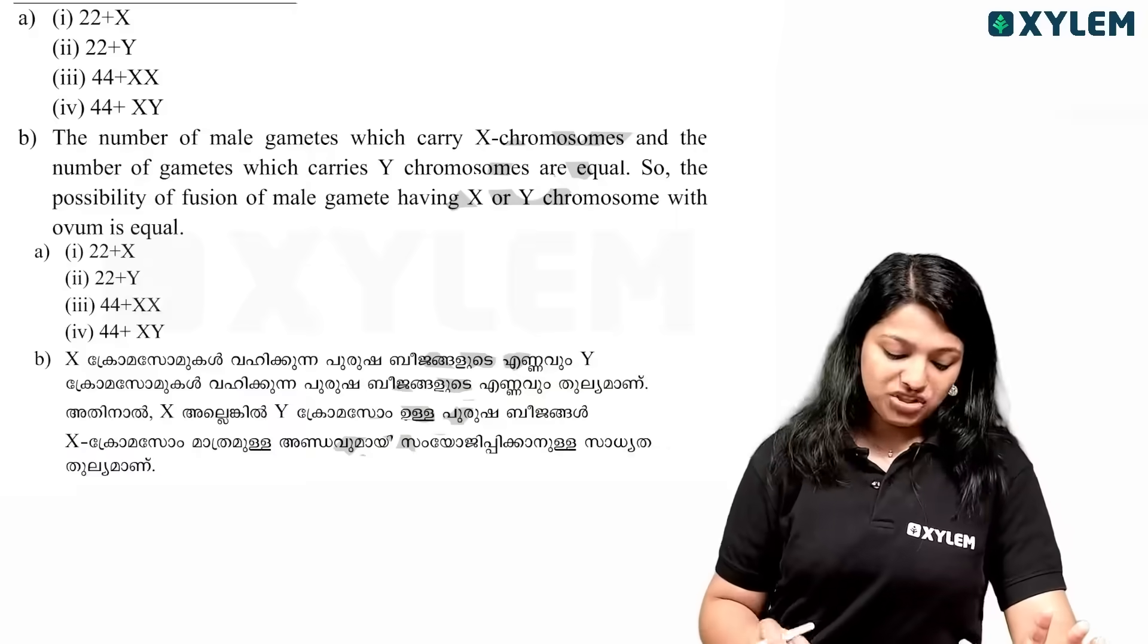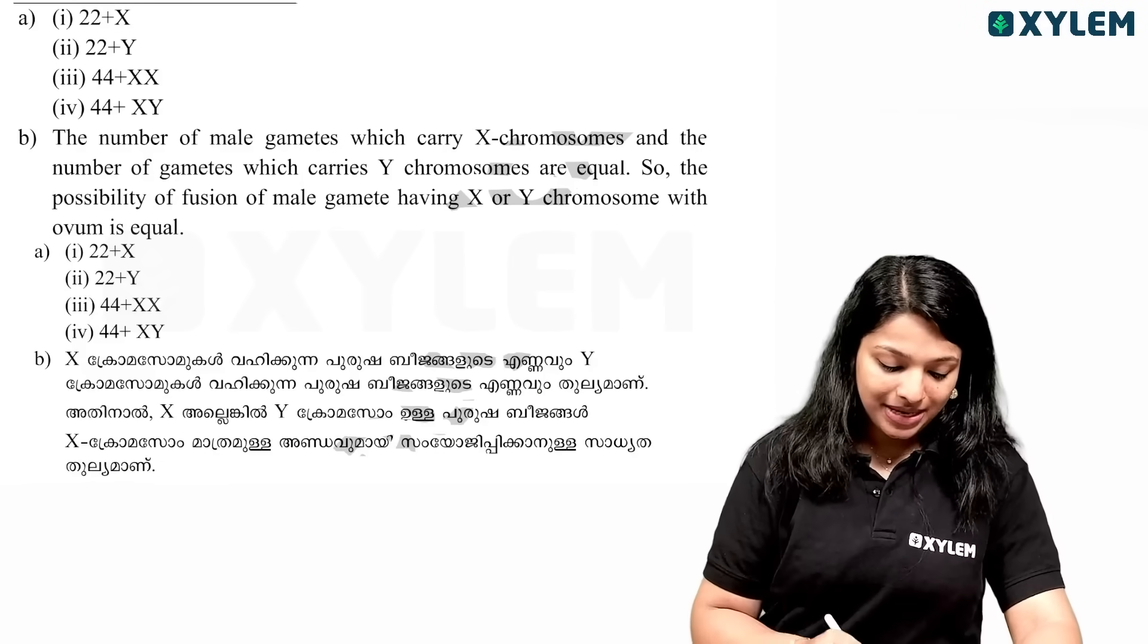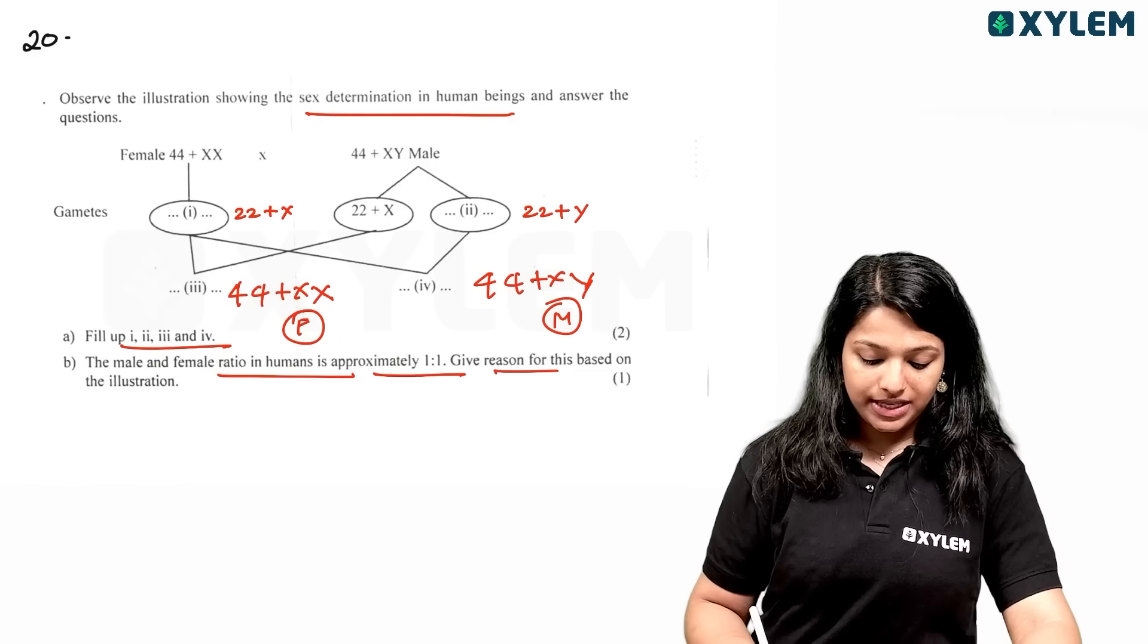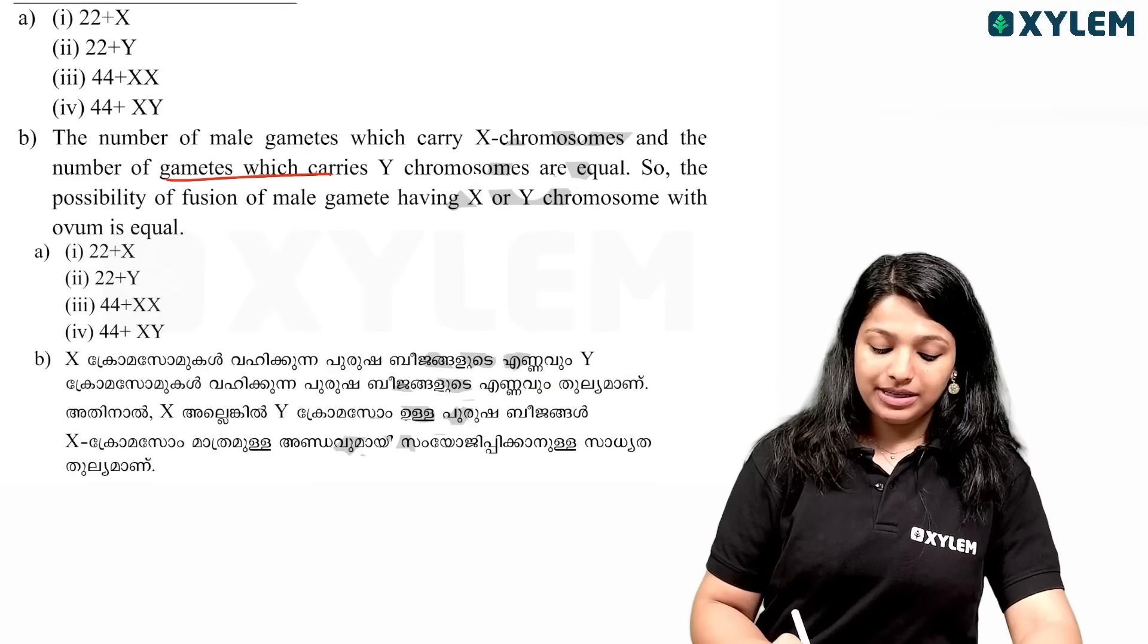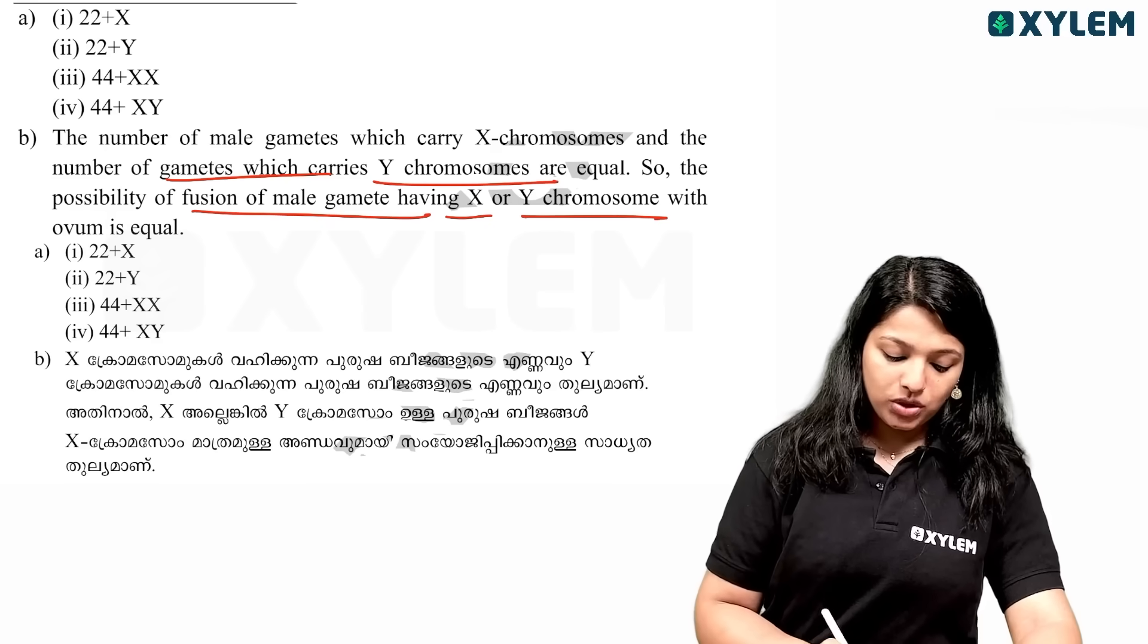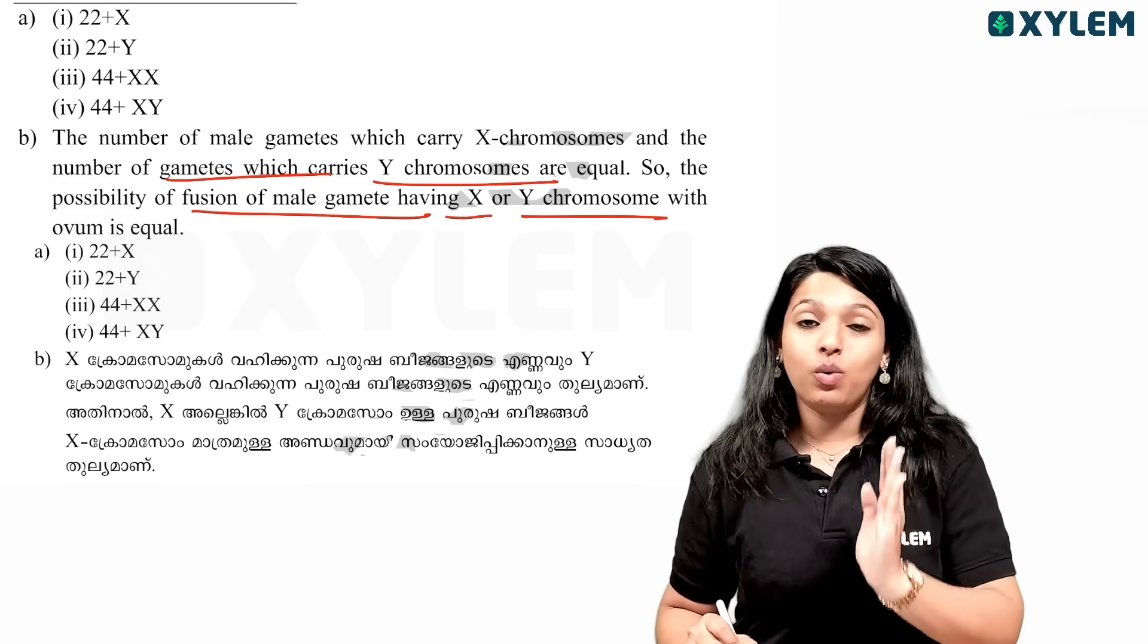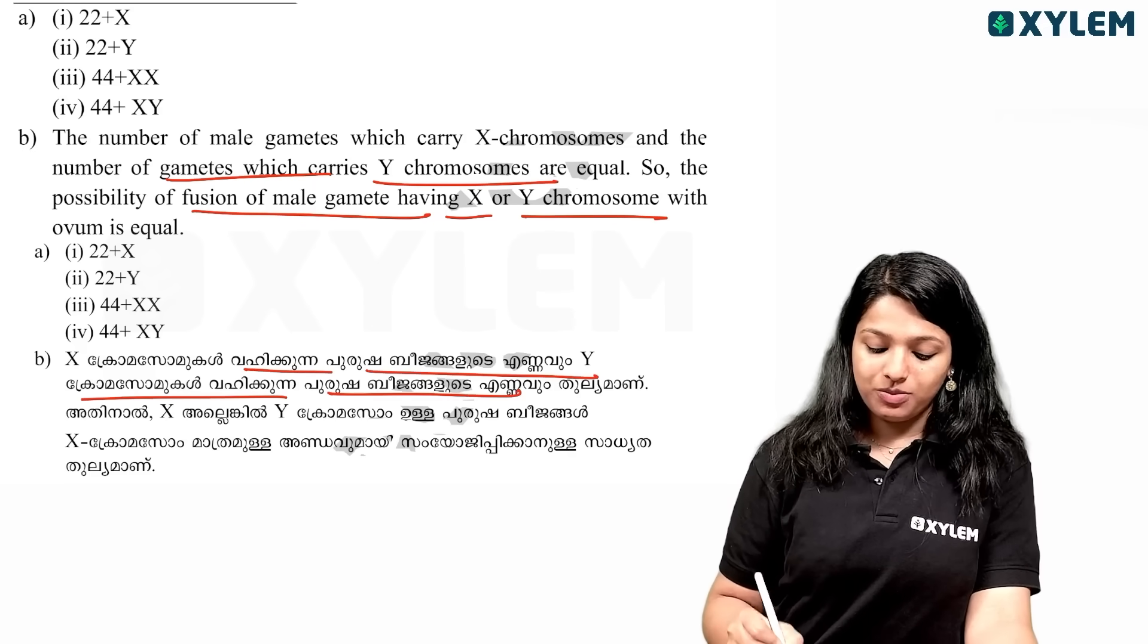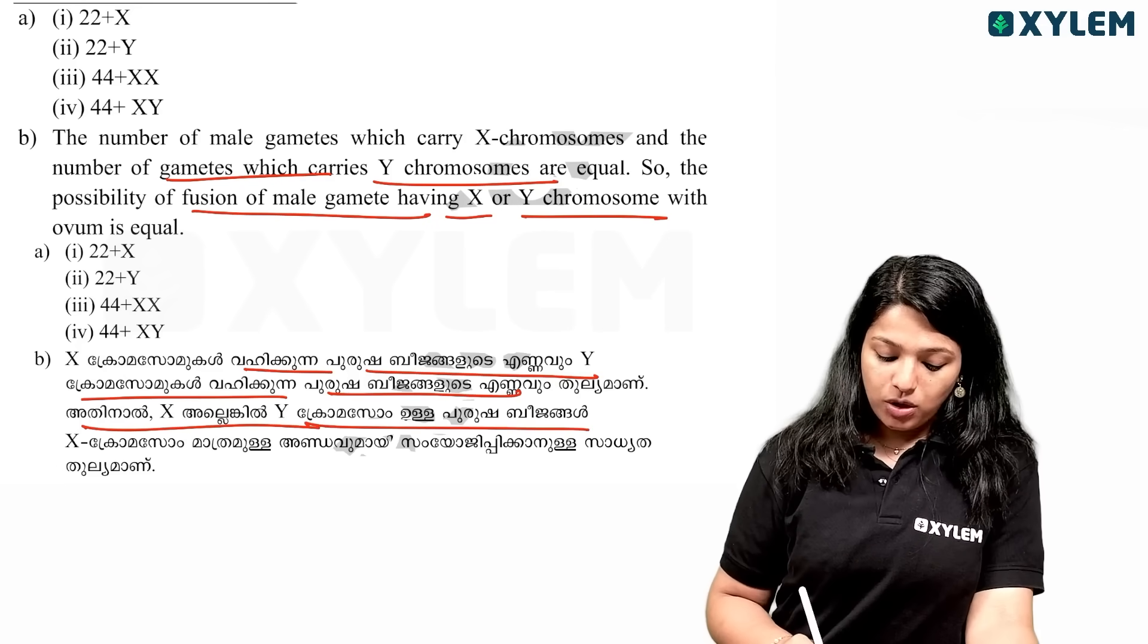The ratio is 1 is to 1. The number of X chromosomes and Y chromosomes are equal. The X chromosome and Y chromosome are equal in ratio.